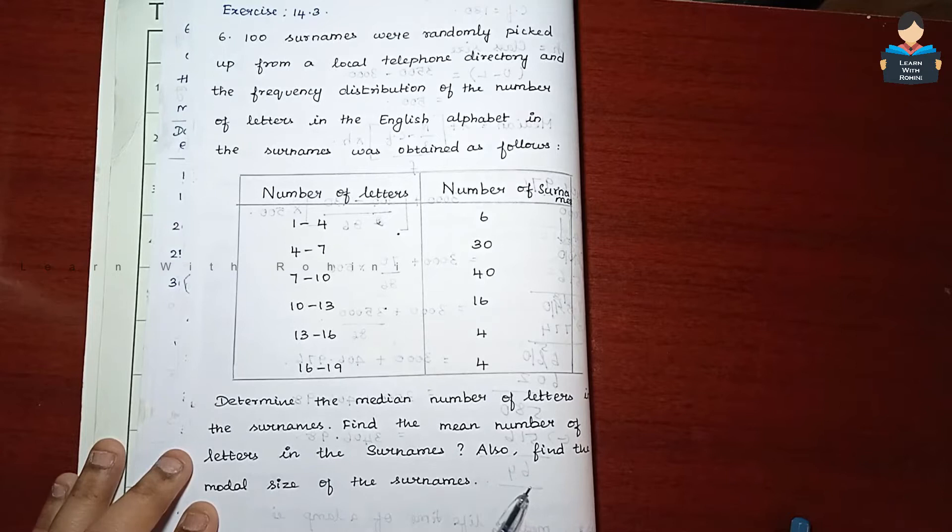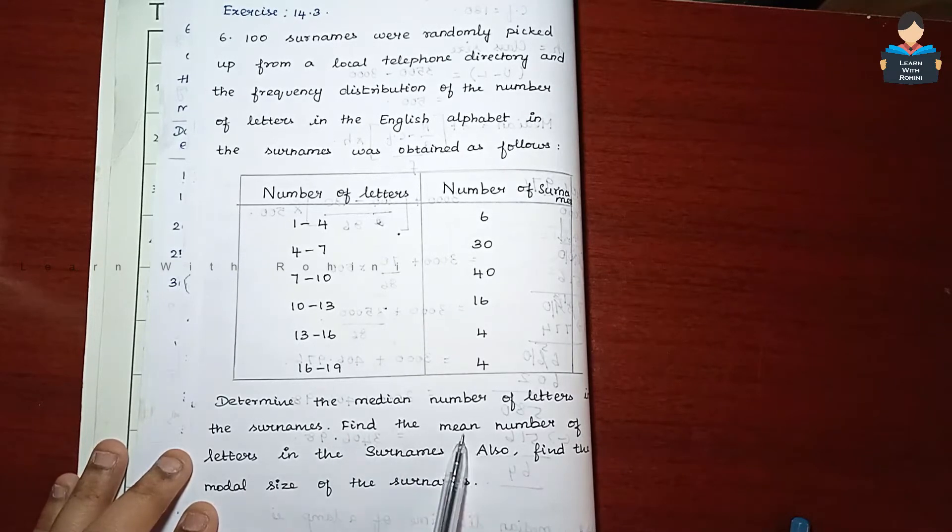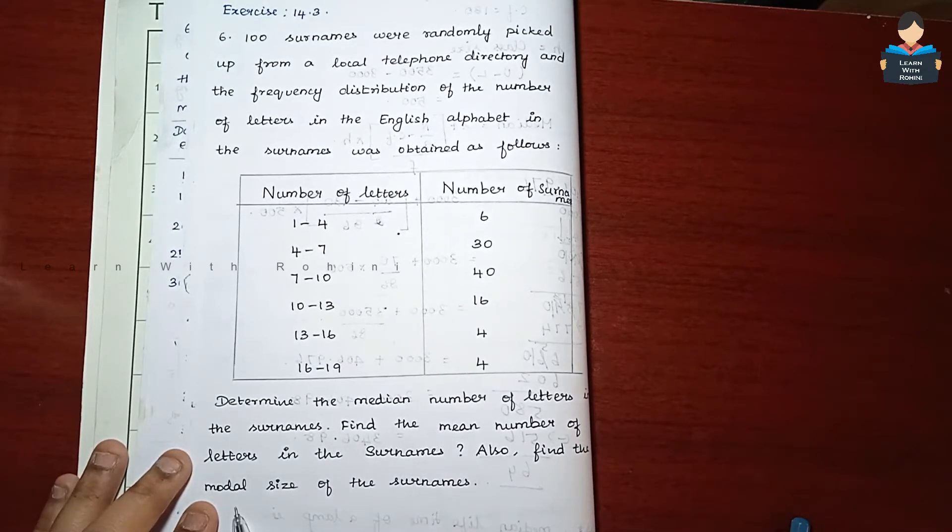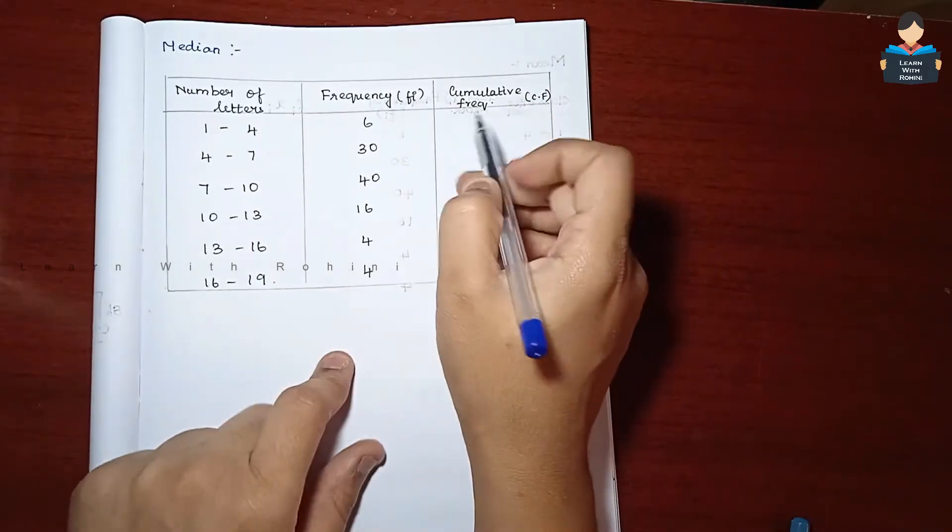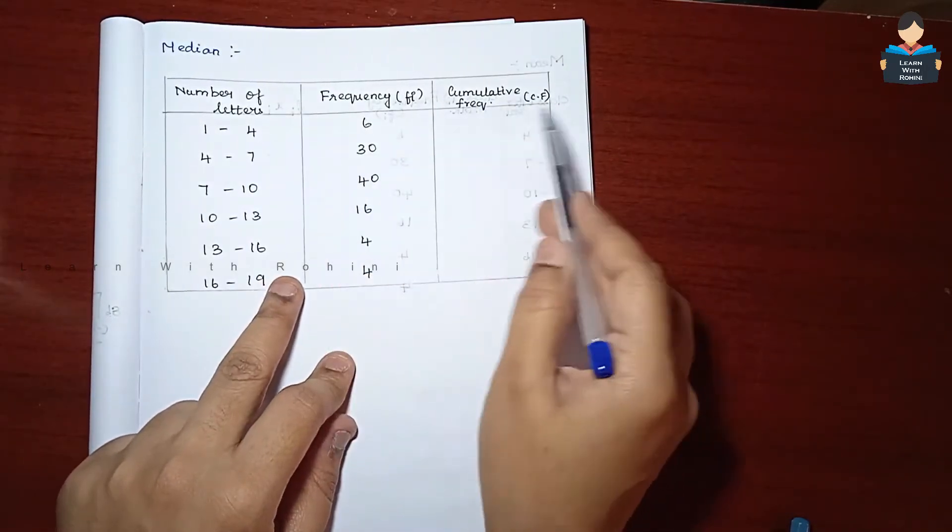Find the mean number of letters in the surname. Also find the modal size of the surnames. We have columns for number of letters and frequency. The cumulative frequency column must be obtained with the number of letters.